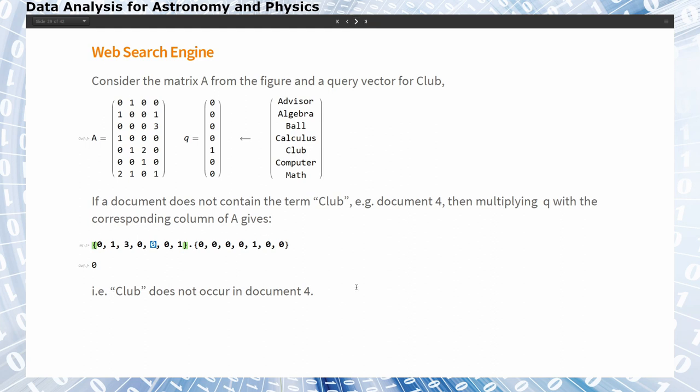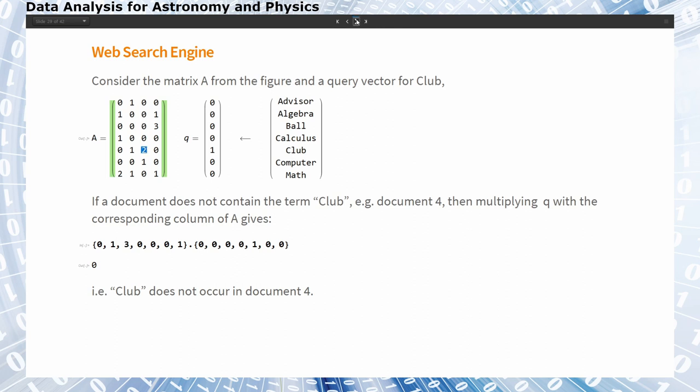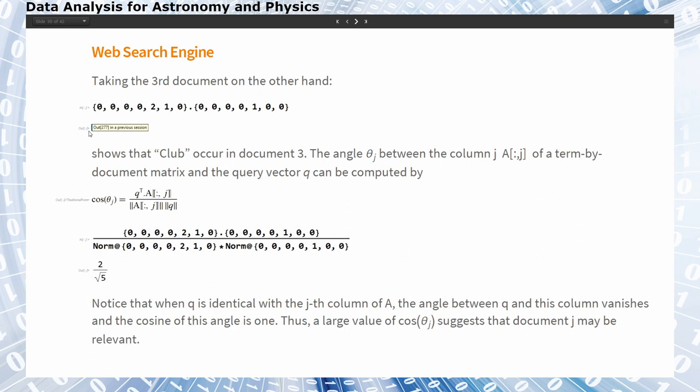In other words, club doesn't occur in document number four. When we take the third document, club occurs two times, so the multiplication returns two. We can think of the query vector and the columns of our matrix A as vectors, then we can compute an angle between our query vector and the matrix by using the standard scalar product. For example, document number three times this is two, divided by the norm of the column and the norm of the query vector, so two by square root of five. This is the cosine of the angle between the two vectors.